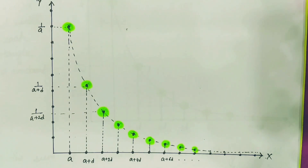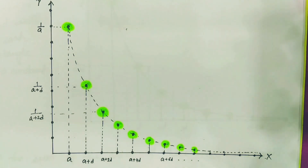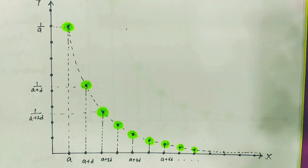In this way, any sequence — AP, GP, or HP — can be plotted on a graph paper, giving us a very clear visualization of the sequence. That is the main point of this video: to give you a visual understanding of AP, GP, and HP. I hope you understand and get a different perspective on these progressions. Have a nice day and stay safe. Thank you all.